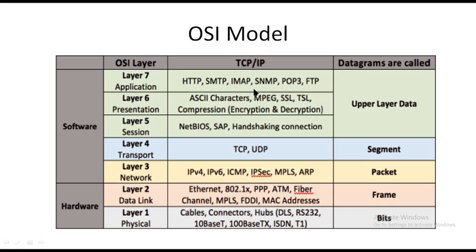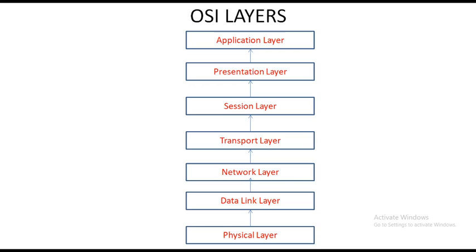These are the protocols used within each layer. Within the application layer the protocols are HTTP, SMTP, IMAP, SNMP, POP3, and FTP. TCP and UDP are the protocols used under the transport layer. These are all the protocols used in the OSI model.